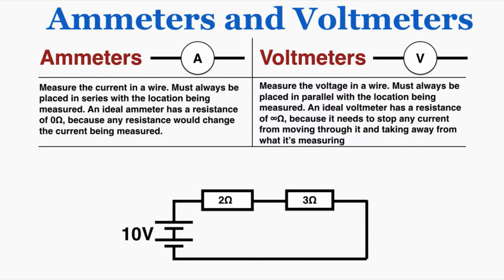A voltmeter measures the voltage in a wire, and voltmeters must always be placed in parallel with the location being measured. An ideal voltmeter has a resistance of infinity ohms, because it needs to stop any current from moving through it and taking away from what it's measuring.